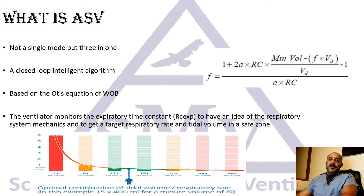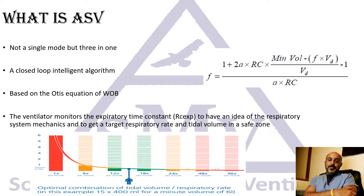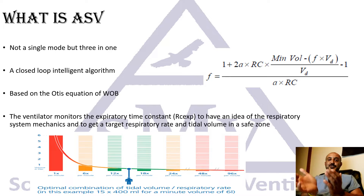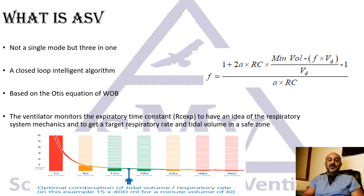What is ASV? ASV is really not a single mode — it's mainly an algorithm, a closed loop, and one of the intelligent modes of mechanical ventilation. If the patient is passive with no spontaneous effort, ASV is basically a pressure-controlled continuous mandatory ventilation mode. If the patient and the ventilator are sharing work, it becomes a pressure-controlled intermittent mandatory mode. And if the patient is fully spontaneous and triggering, it becomes pressure support ventilation.